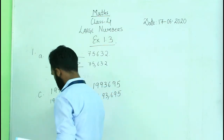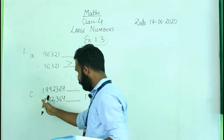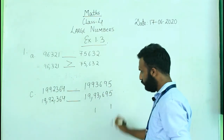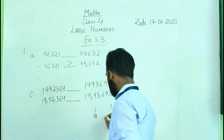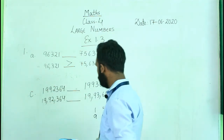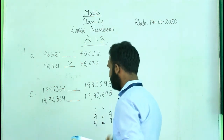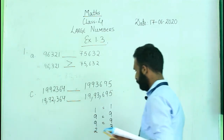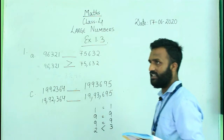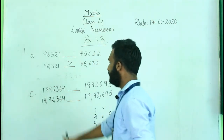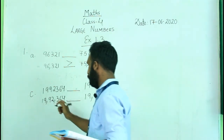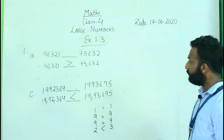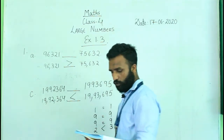Now let's compare these numbers. At the ten lakhs place, both have 1 — same. At the lakhs place, both have 9 — same. At the ten thousands place, both have 9 — same. At the thousands place, the first has 2 and the second has 3. Since 2 is less than 3, the first number is less than the second. So: 19,92,364 < 19,93,695.